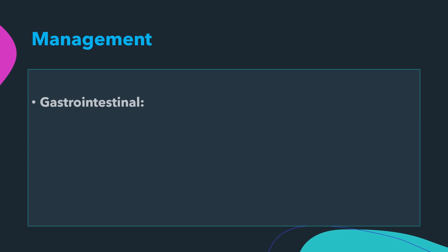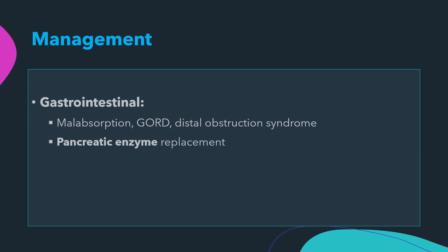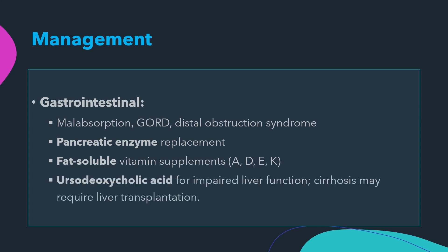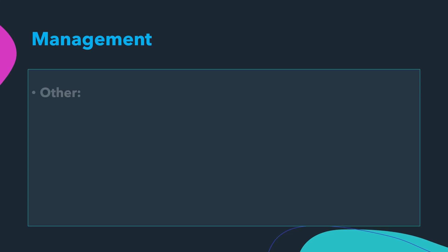Gastrointestinal symptoms should also be treated, including malabsorption, gastroesophageal reflux disease, and distal obstruction syndrome. Pancreatic enzyme replacement and fat-soluble vitamin supplements should be given. Ursodeoxycholic acid is used for impaired liver function, and when cirrhosis develops, liver transplantation may be required.